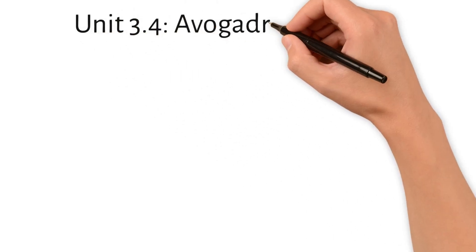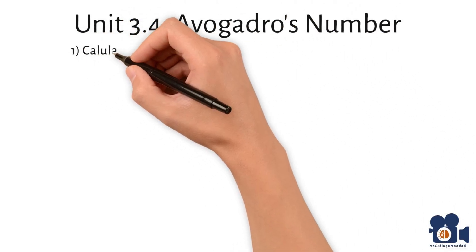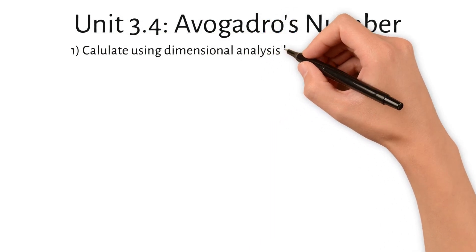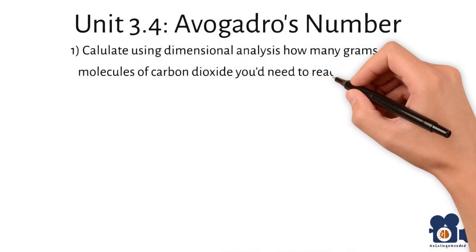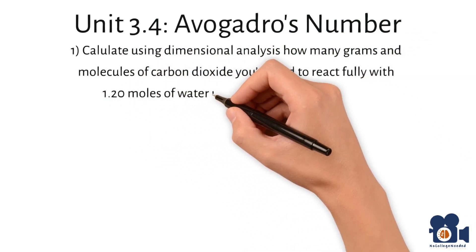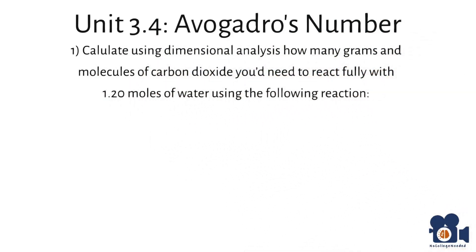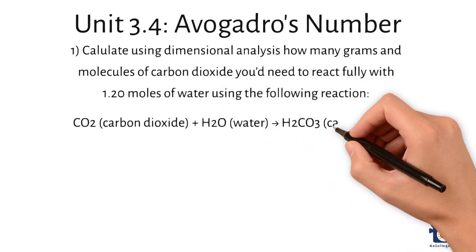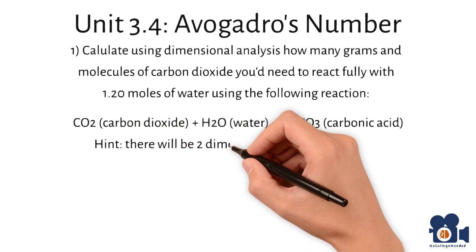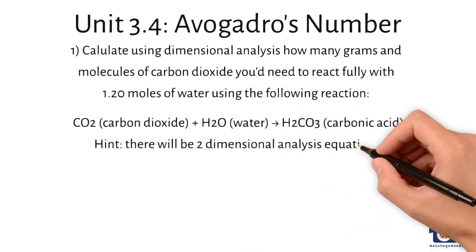Unit 3.4, Avogadro's Number. Calculate using dimensional analysis how many grams and molecules of carbon dioxide you'd need to react fully with 1.2 moles of water using the following reaction: CO2 plus H2O going to H2CO3. Hint, there will be two dimensional analysis equations.